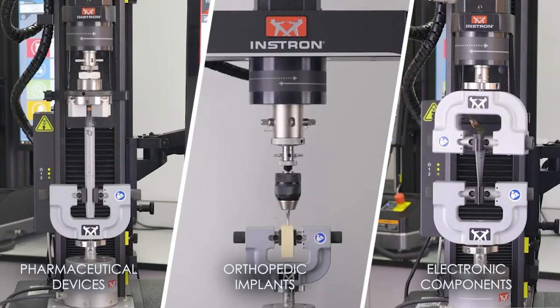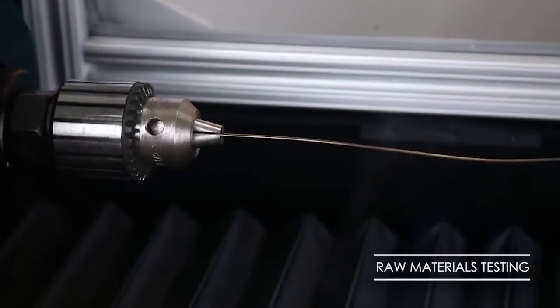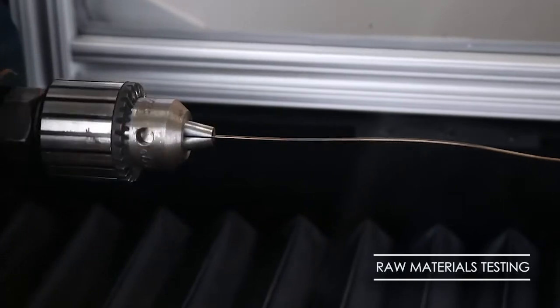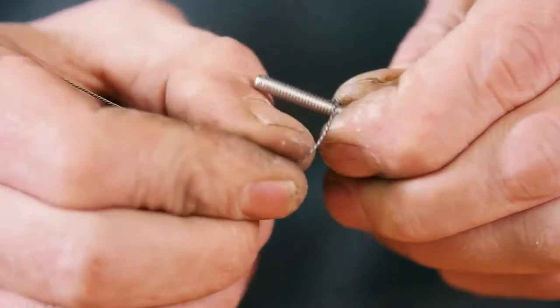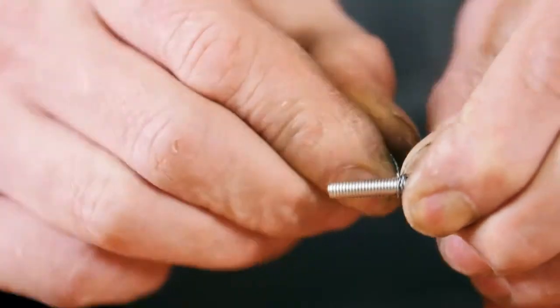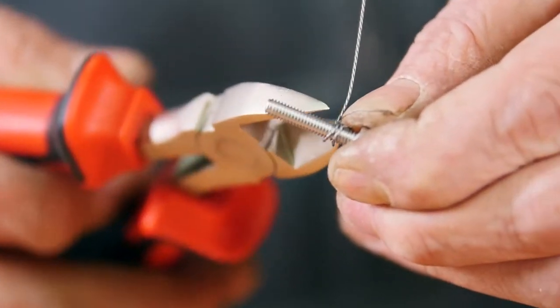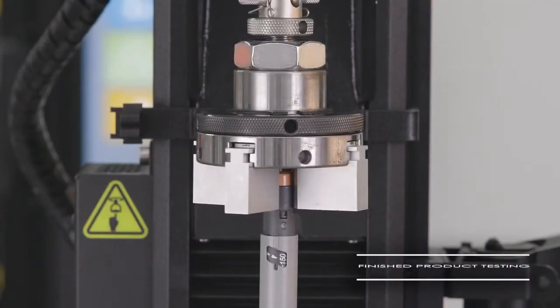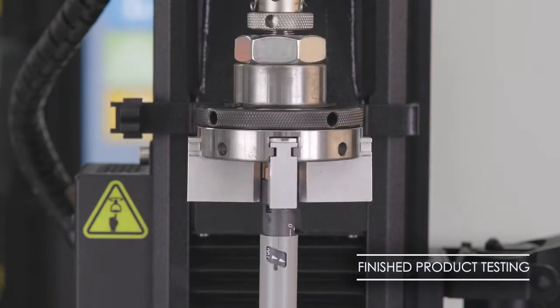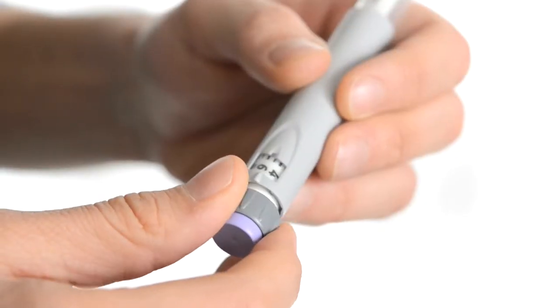Torsion testing can be performed on both raw materials and finished products. Raw material testing is done to confirm that manufacturers are using materials that meet the performance specifications for their intended application. Finished product testing ensures that finished products perform as expected.